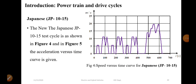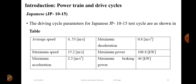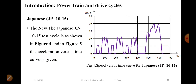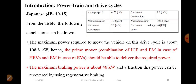The next drive cycle is the Japanese Drive Cycle, JP 10-15. The speed versus time curve shows constant speed intervals. The average speed is 6.53 meters per second, maximum speed is 15.2 meters per second. The maximum braking power is 46 kW and the maximum power is 108.8 kW.